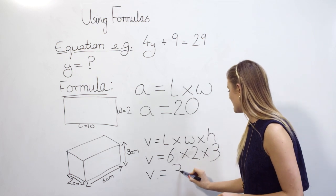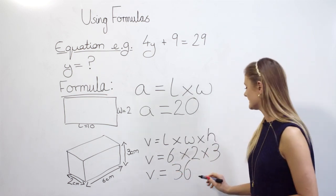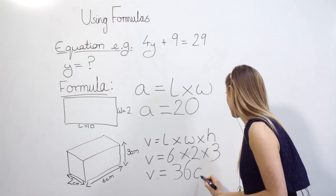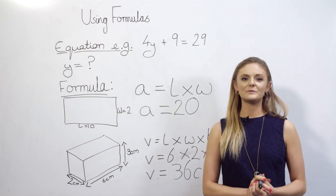And we know that this is 36. So the volume, if we add in the units, is 36 centimeters cubed. And that's how we use formulas in algebra.